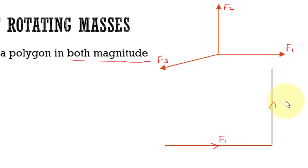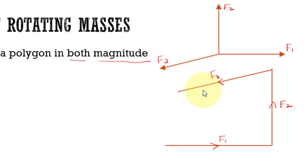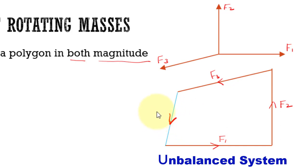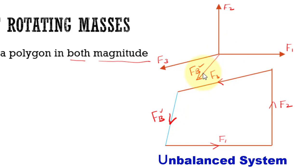I represent F2 as the next side of the polygon in both magnitude and direction. For the third force, I draw a parallel line with the same magnitude to represent it. Now we can see whether the polygon is closed or not. Visually, the polygon is not closed, so the closing side represents the balancing force required to balance the given system, shown here in the force diagram.